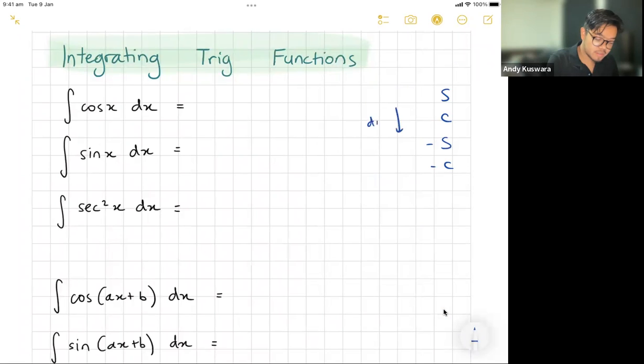If I differentiate it goes down this way. When I integrate it goes up this way, right? So sine will differentiate to cos, cos will differentiate to negative sine, negative sine will differentiate to negative cos, and then the same will work if I integrate that way.